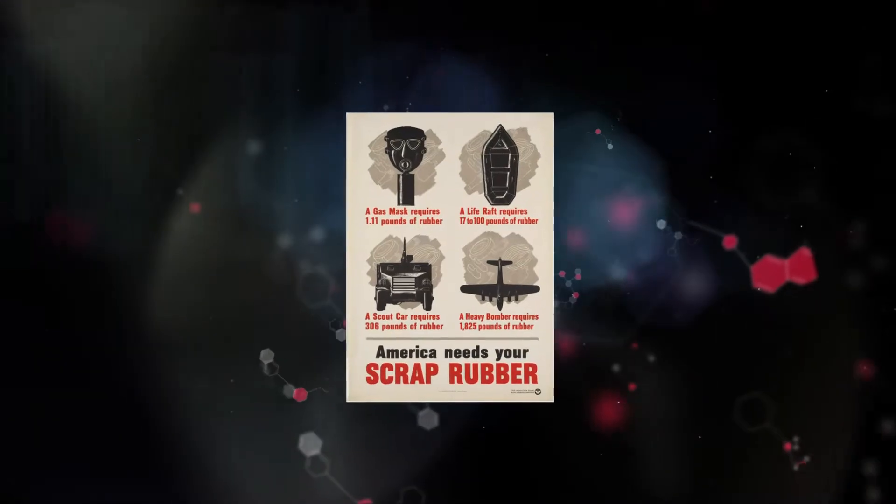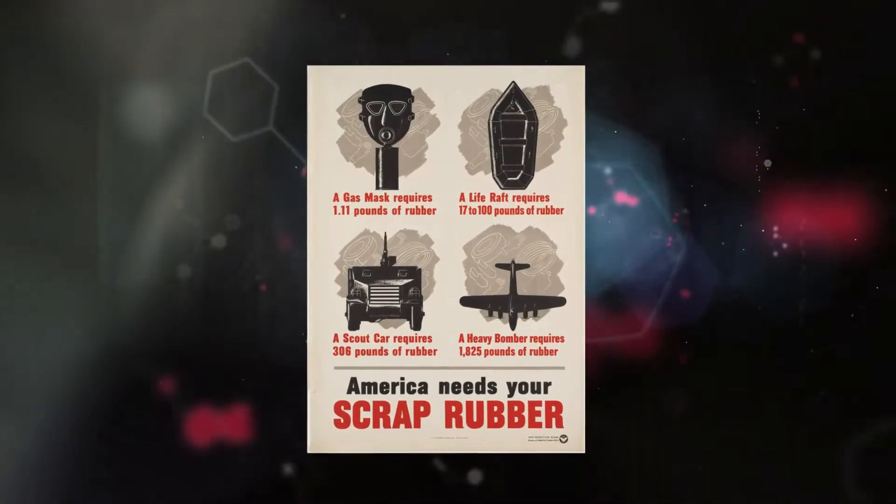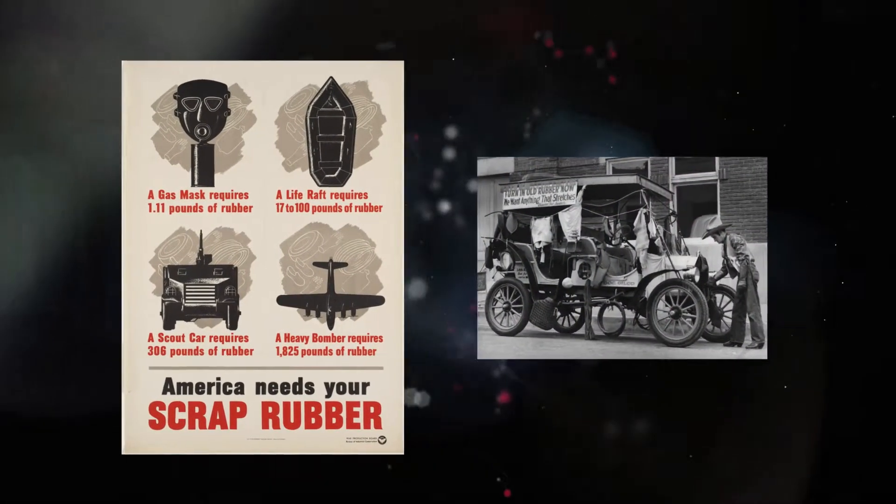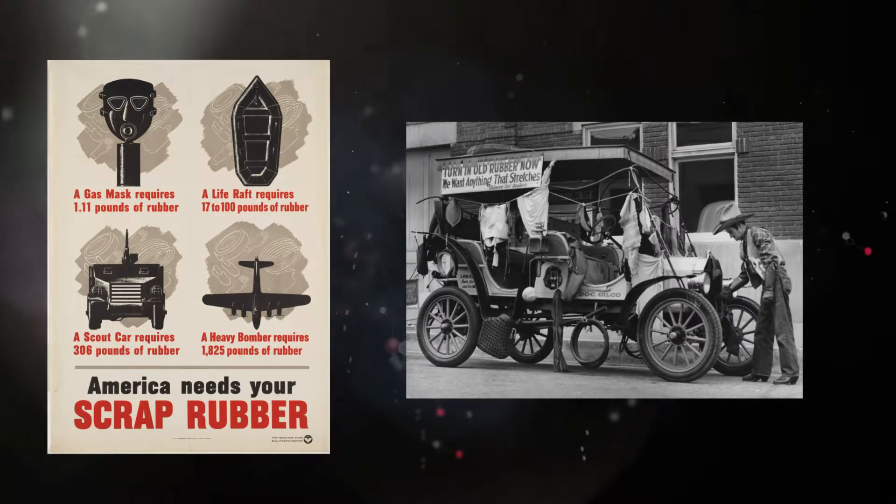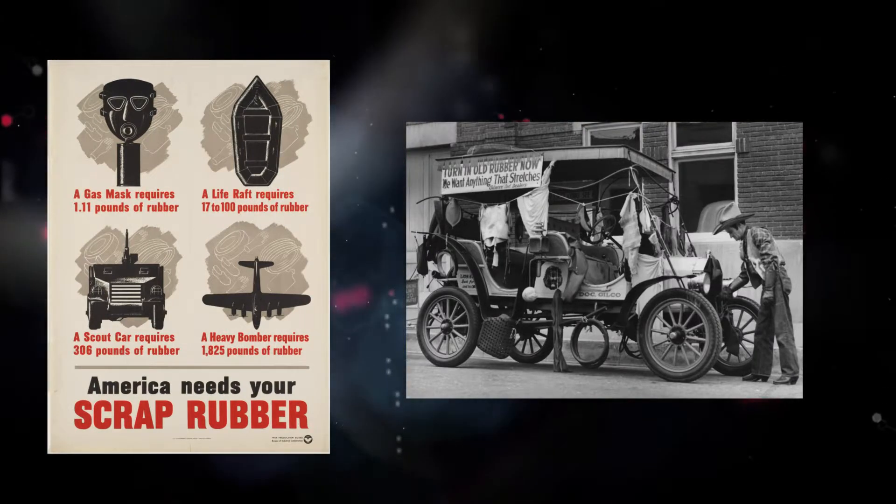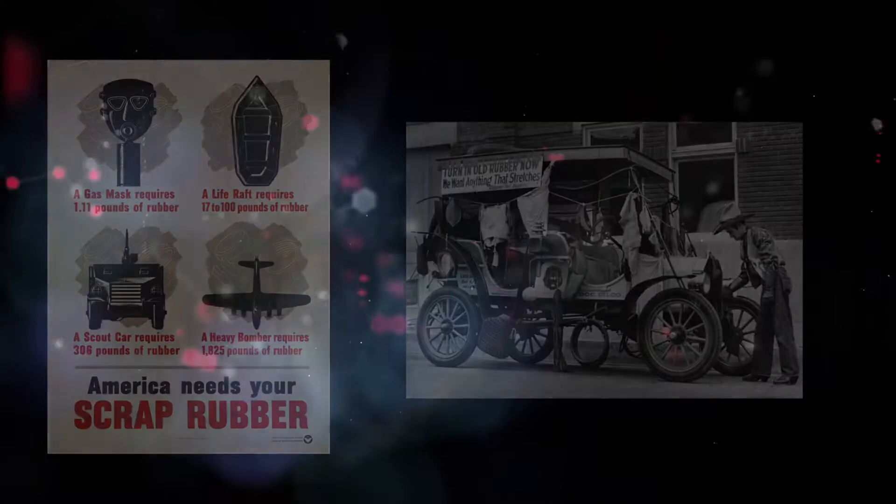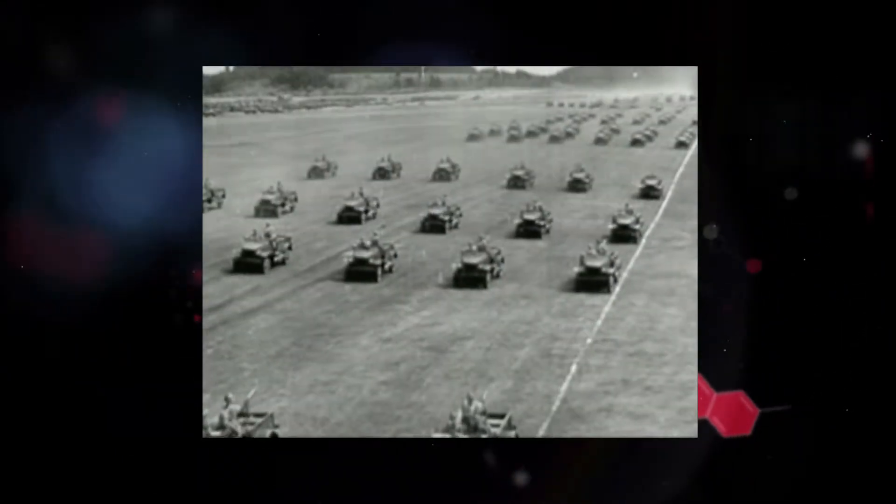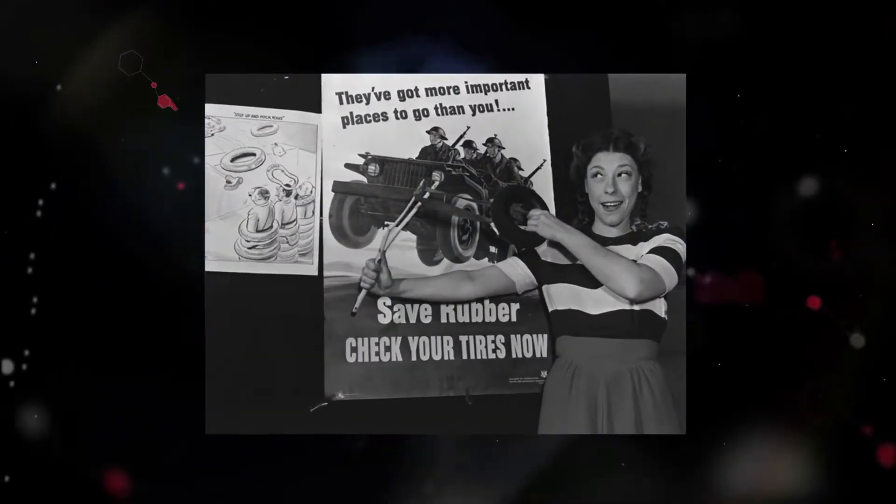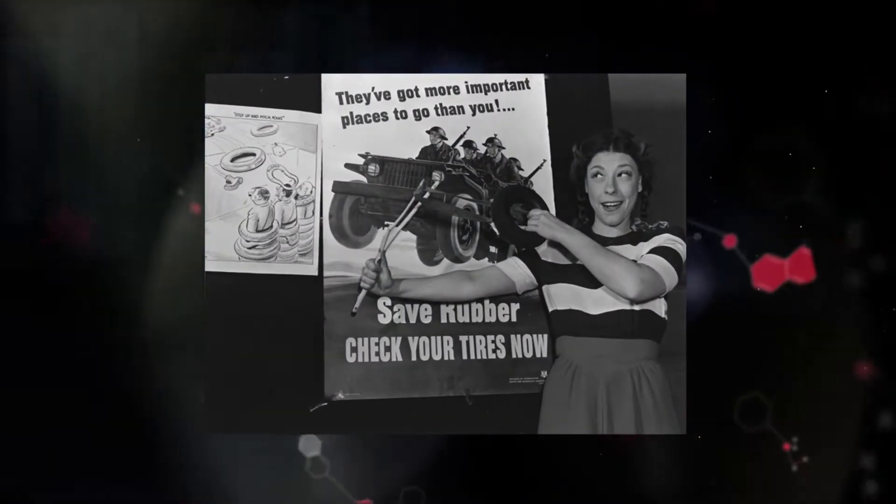This all changed dramatically during World War II with the demand for synthetic rubber. At the outbreak of the war, the U.S. was cut off from vital supplies of natural rubber. A modern army marched on rubber tires as much as it did on its stomach. The U.S. government started a huge crash program to develop a synthetic rubber, and for this, it needed a powerful new instrument.